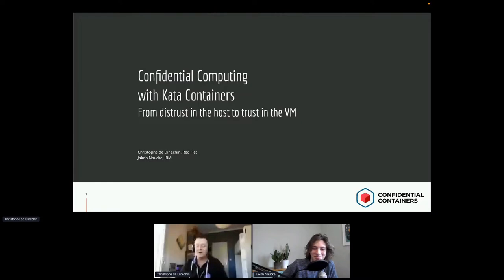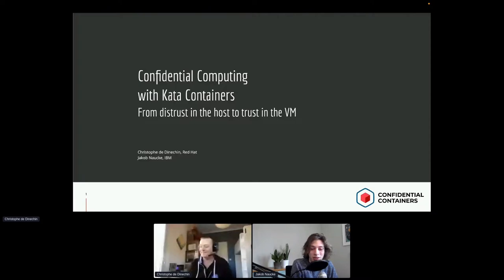Jacob: Yeah, hi. My name is Jacob Nauke. I work in cloud development for Linux and OpenShift on IBM Z, Linux One at IBM. I'm also active in the Kata Containers and Confidential Containers communities. And Christophe is going to kick it off.